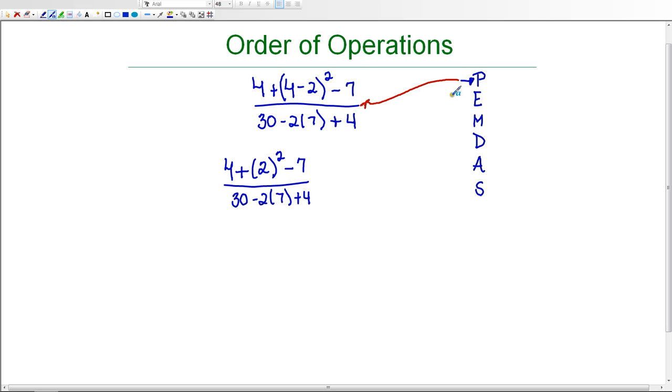So now my parentheses are gone and I'm going to look for exponents. I do have an exponent here so I'm going to evaluate 2 squared, or 2 to the second power. 2 to the second power means 2 times 2 which is 4.